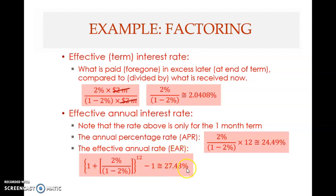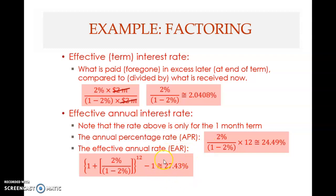The effective annual rate is 27.43%. So what seems very small - two percent - on a yearly basis is quite high when you take compounding into consideration. The cost becomes 27.43% per year. That is the cost the company will incur if it sells receivables to a factor - if it uses factoring for financing, the cost of that financing is 27.43% per year, which is quite high.